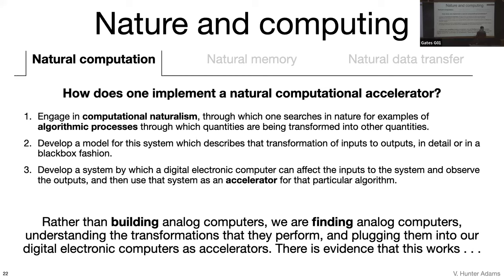This is very similar to the process you have to go through when developing an analog computer. The first step was developing an understanding of the system you're trying to model: what are the degrees of freedom, what are the equations that dictate how they change with time. Then you develop a system by which your digital electronic computer can affect the inputs to this natural system by means of actuators and observe the outputs by means of sensors. If you can do that, you can use that natural process to accelerate whatever algorithm it happens to be doing. These are analog computers that evolution and physics have built—rather than building analog computers, we can find them.